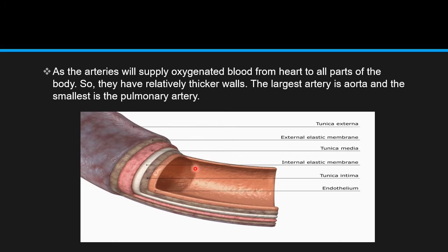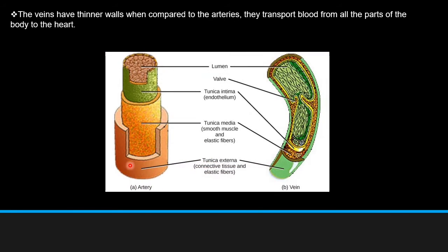The middle layer between the external and internal is called the tunica media. There are two elastic membranes — the external elastic membrane and the internal elastic membrane. There is also the tunica intima, which is the internal layer. The innermost wall is the endothelium.